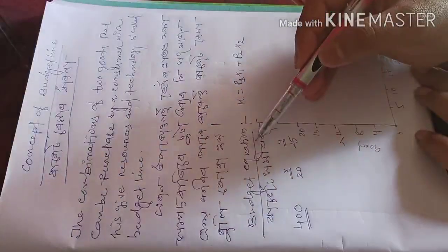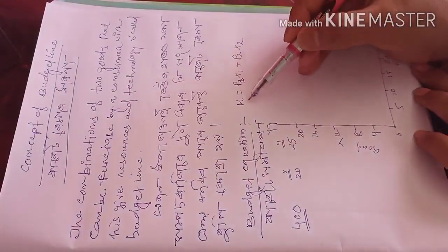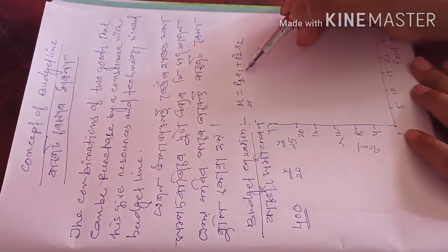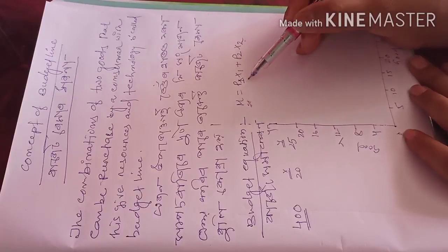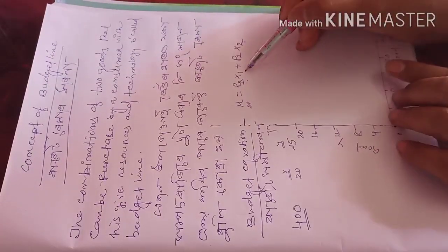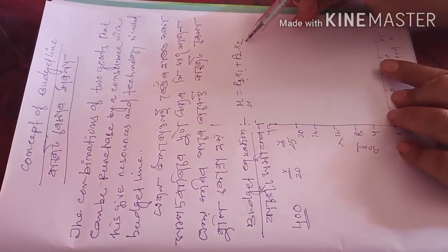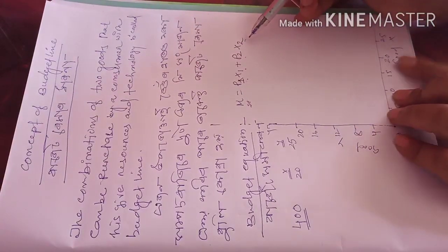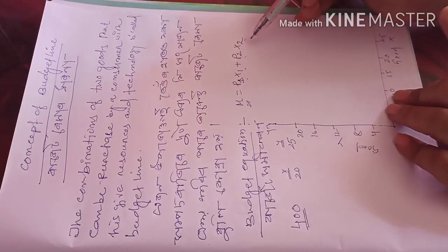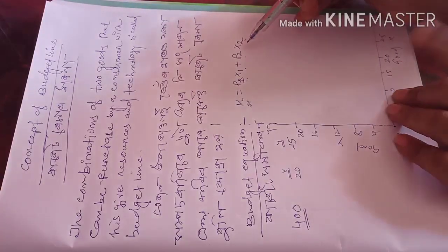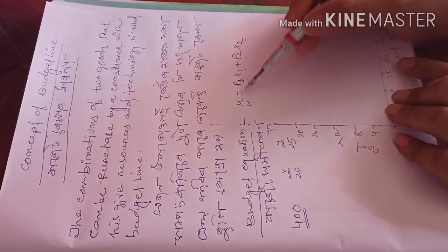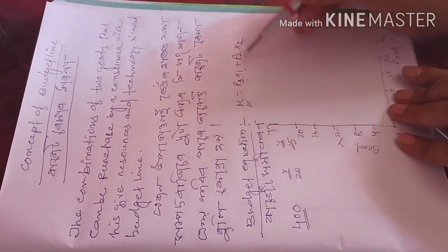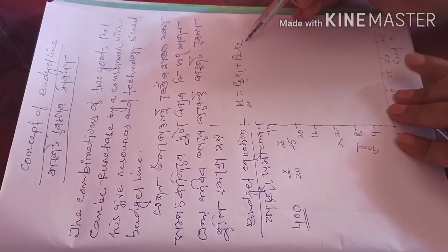Now it comes to the budget equation. The budget equation is denoted by M, where M equals P1·X1 plus P2·X2. Here, P1 is the price of commodity X1 and P2 is the price of commodity X2. This is the standard equation of the budget. If the question asks for the budget equation, you have to write: M = P1·X1 + P2·X2, where P1 is the price of X1 and P2 is the price of X2.